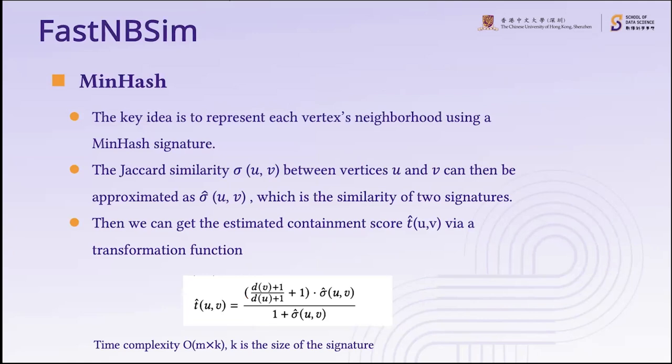We then propose our second algorithm, Fast-MBSM. The motivation is that in real-world graphs, some vertices have very large degree and their neighborhoods are iterated repeatedly, which can be very time-consuming. To improve efficiency, we use the MinHash technique to approximate the containment score. The key idea is to represent each vertex neighborhood using a MinHash signature. The Jaccard similarity sigma(u,v) between vertices u and v can then be approximated as sigma-hat(u,v), the similarity of two signatures, from which we derive the estimated containment score t-hat(u,v) via a transformation function. The time complexity of this algorithm is reduced to O(M × k), where k is the size of the signature.